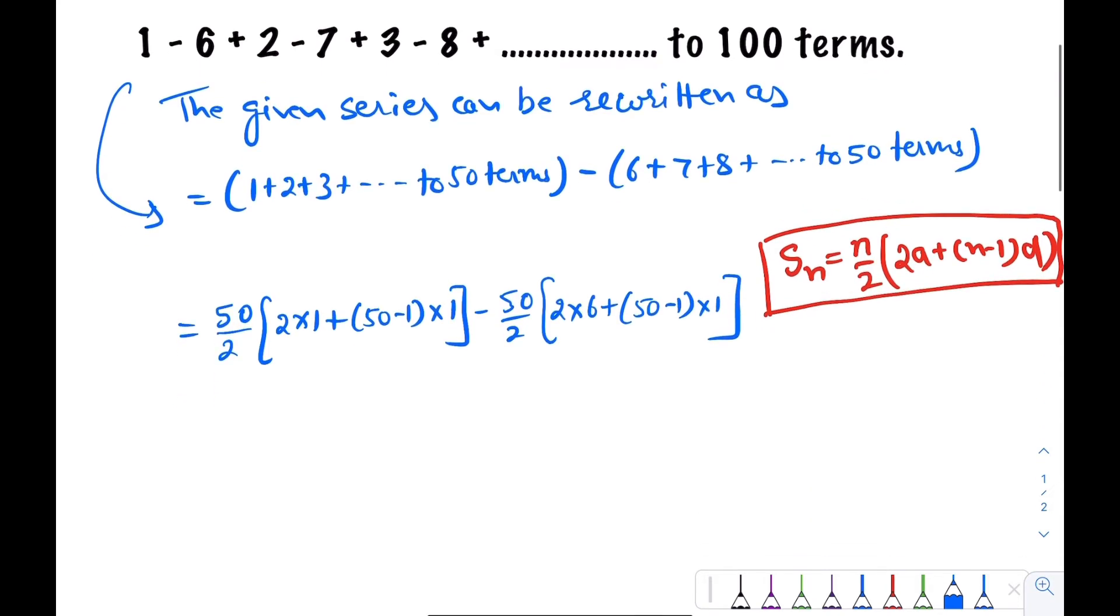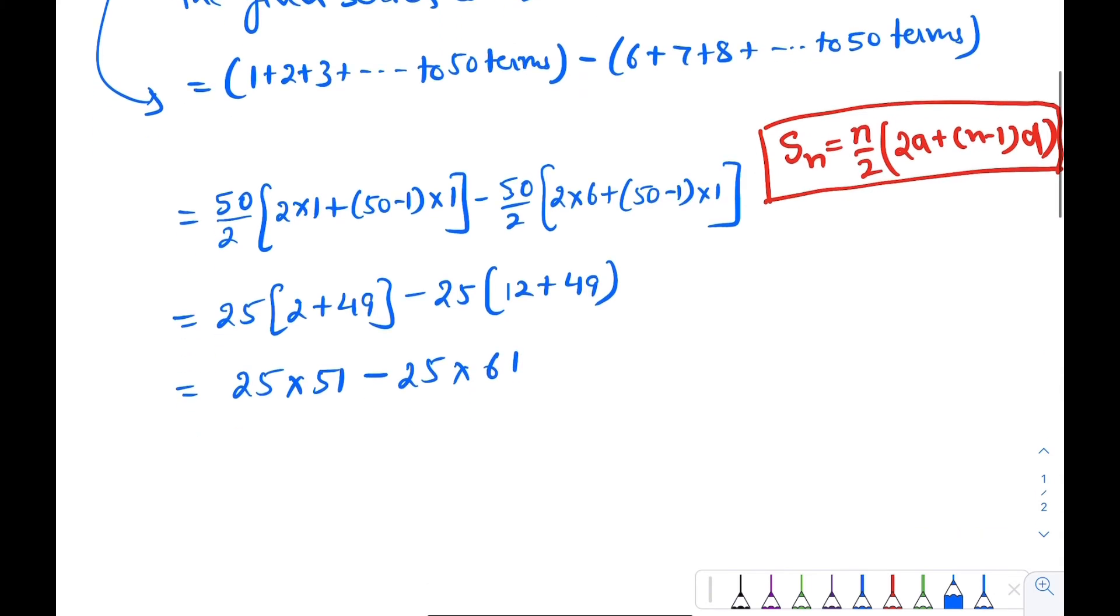This is equal to, now we can write this as 25(2 + 49) - 25(12 + 49). And this is equal to 25*51 - 25*61.